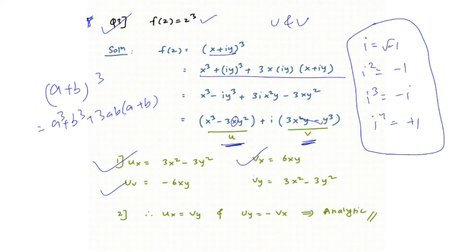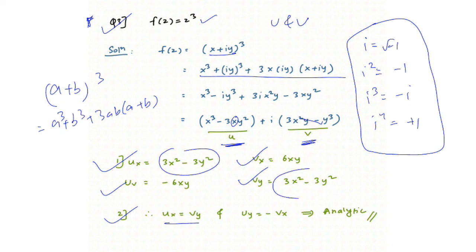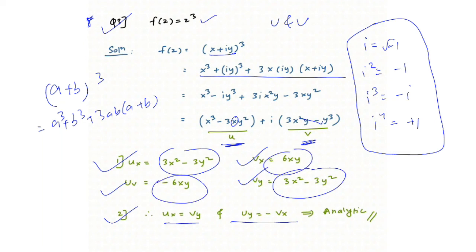After computing the partial derivatives, check the Cauchy-Riemann conditions: uₓ = v_y — that is true. And u_y = −vₓ — that is also true. So the function f(z) = z³ is analytic.